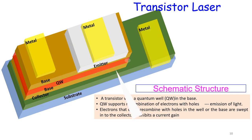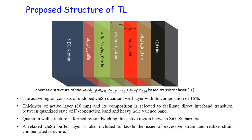This is the proposed structure of the transistor laser. The active region consists of undoped germanium and GeSn quantum well layers with tin incorporation of 16%. N-type SiGeSn forms the emitter and collector of the device respectively, and the width of the quantum well, base region, and barrier region are each calculated as 10 nanometers.